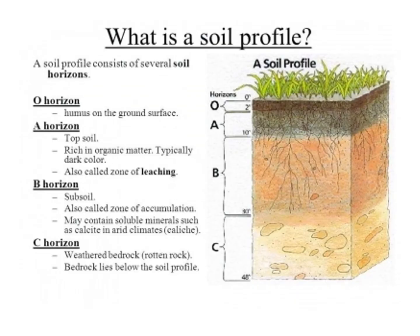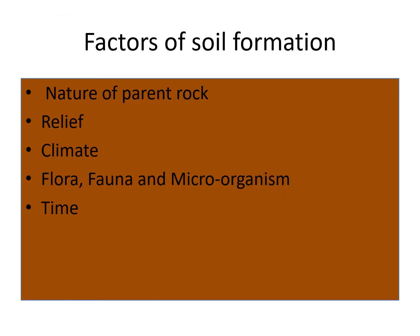Here is the soil profile. We can divide the soil profile into 3 categories: A Horizon, which refers to topsoil; B Horizon, subsoil; and C Horizon, parent rock. Factors which are responsible for soil formation include nature of parent rock, relief, climate, flora, fauna and microorganisms, and time.